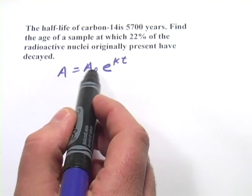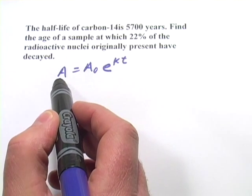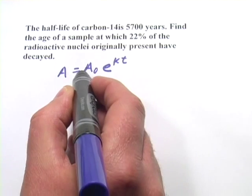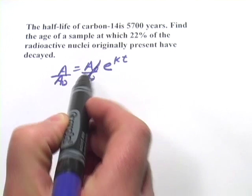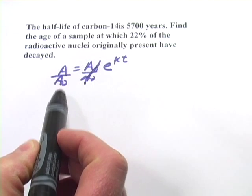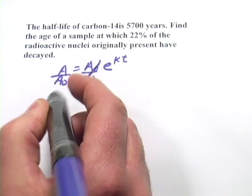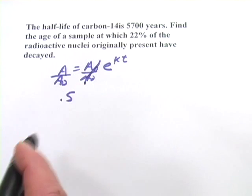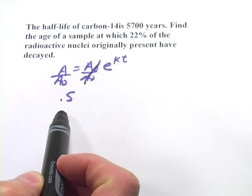So we could just say, well, what if we started with 100 grams? At the point of its half-life, 50 grams would be left. And we could actually divide here by A sub-0 and simplify this equation. So we could put in the ratio of what's left over here and then set it equal to that. And for half-life equations, that ratio is 0.5, because by definition, the half-life means half of it is left.